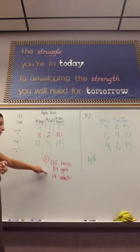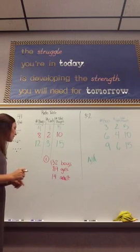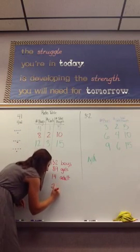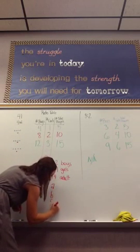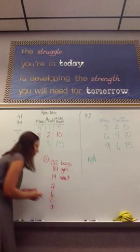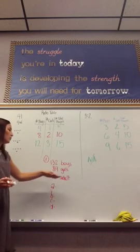Now, it wants you to use this information to create ratios for A, B, C, and D. Each of them are asking you to write a different ratio using this information.